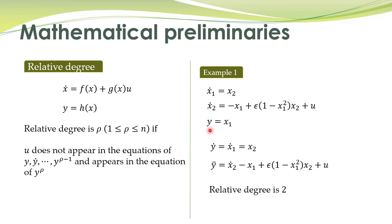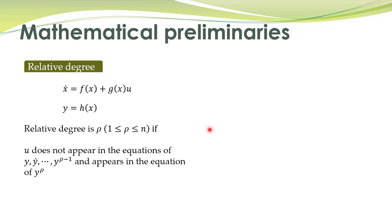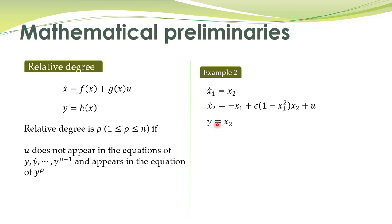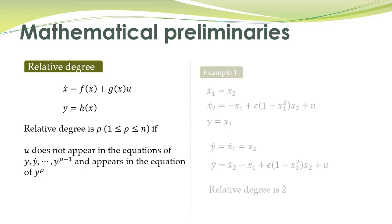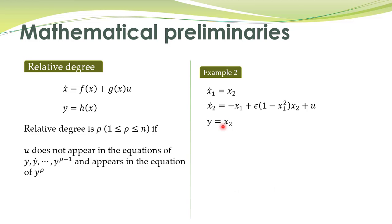In another example, we have a nonlinear system. The only difference is the output is different. Here the output was x1, and here the output is x2 for this particular system. We take the derivative of this equation to get the expression for y-dot, and u appears in the equation of y-dot. Therefore the relative degree of this nonlinear system is equal to 1, because it appears in the first derivative of the output equation.